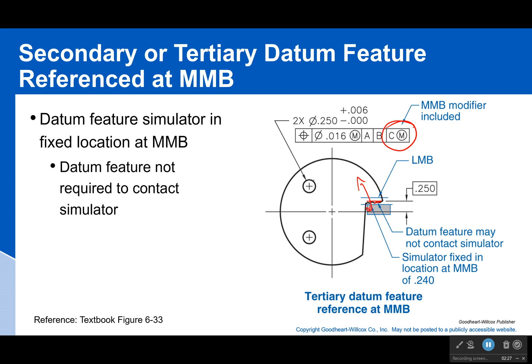That means that the location of these holes — they are able to move a little bit more than they would otherwise because this can wiggle back and forth. And that's normal. If this is what's locating these two holes and it can move a little bit, then the holes can move a little bit. And perhaps a part that is functionally correct, even if it's not perfectly accurate, will still work and will still pass because of this.